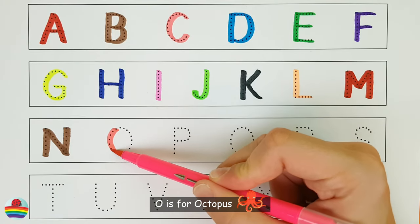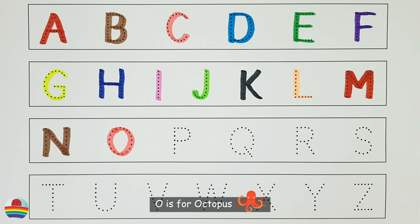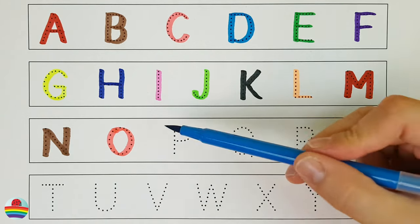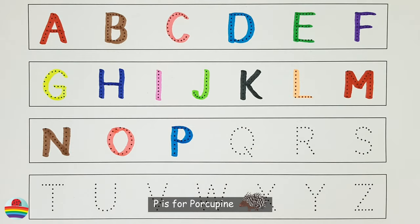O. O is for octopus. P. P is for porcupine.